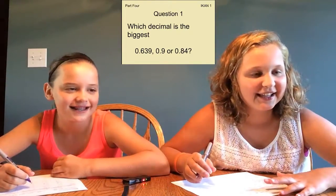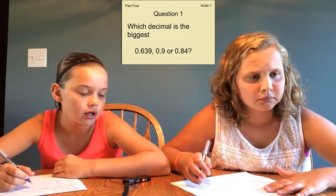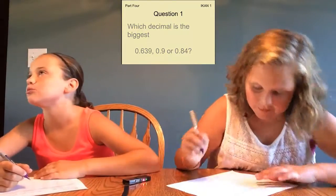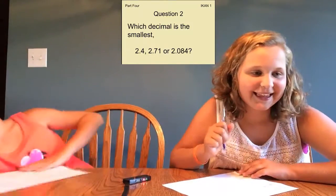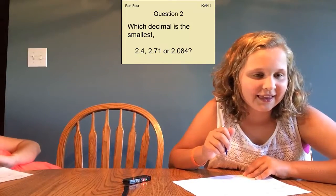Which decimal is the biggest? 0.639, 0.9, or 0.84? Which decimal is the smallest? 2.4, 2.71, or 2.084?